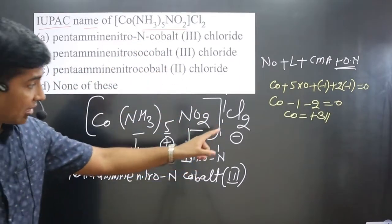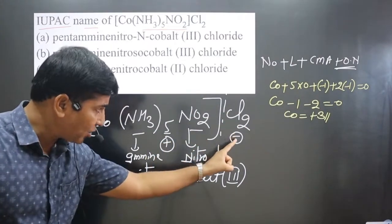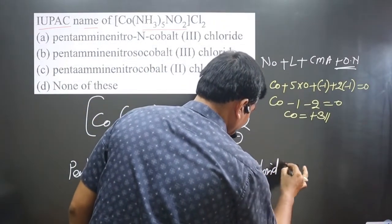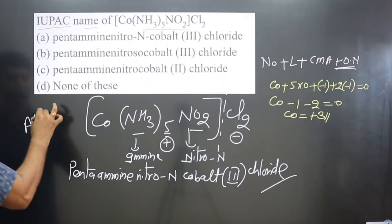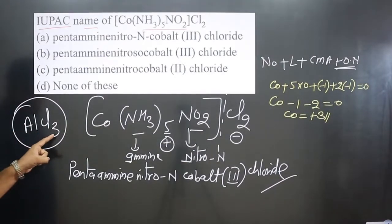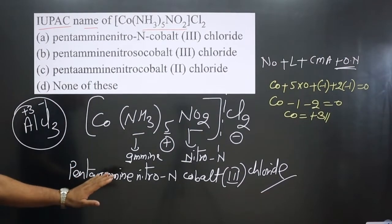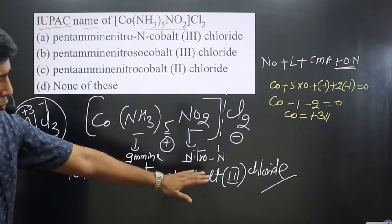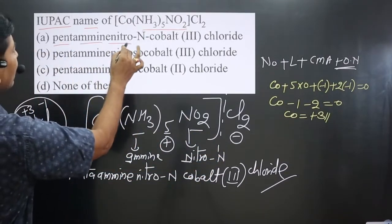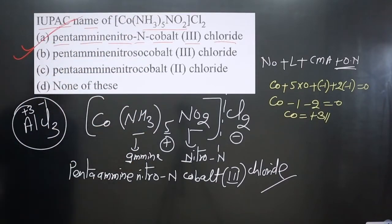We should not write 'dichloride' because the two comes from balancing the charge of the cationic and anionic parts. You write only 'chloride' — just like aluminium chloride, not aluminium trichloride. So the full name is pentaaminenitrocobalt(III) chloride. You can see we get the first option as the correct answer.